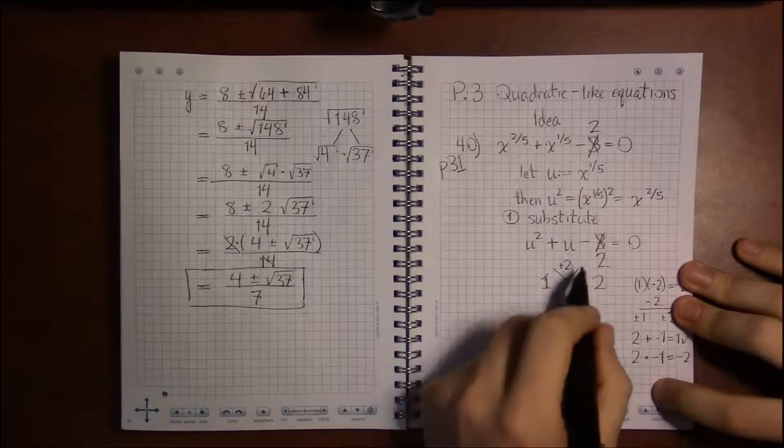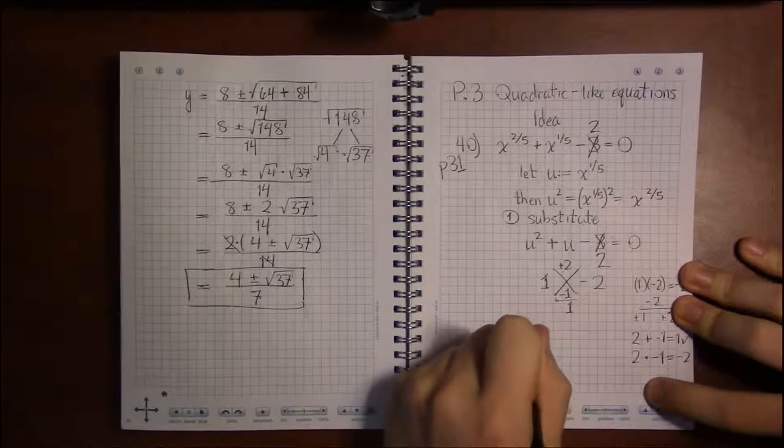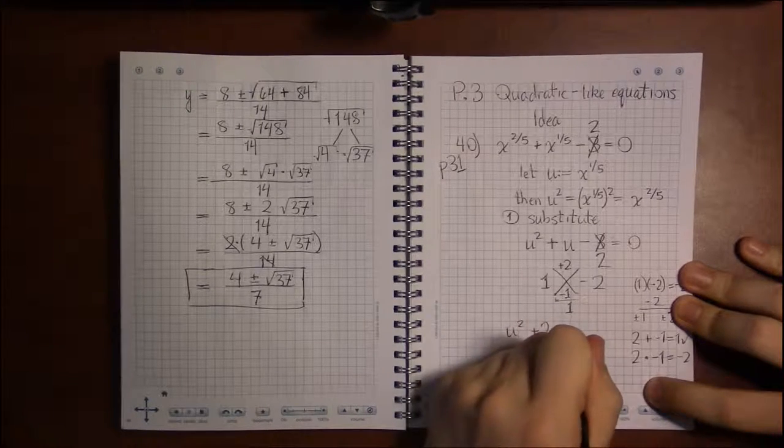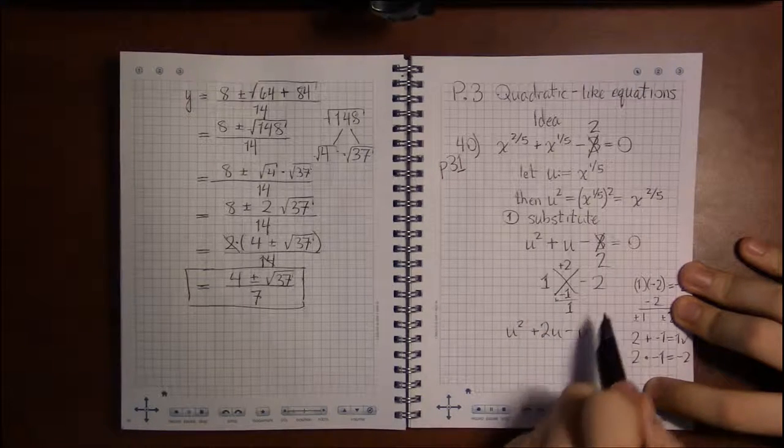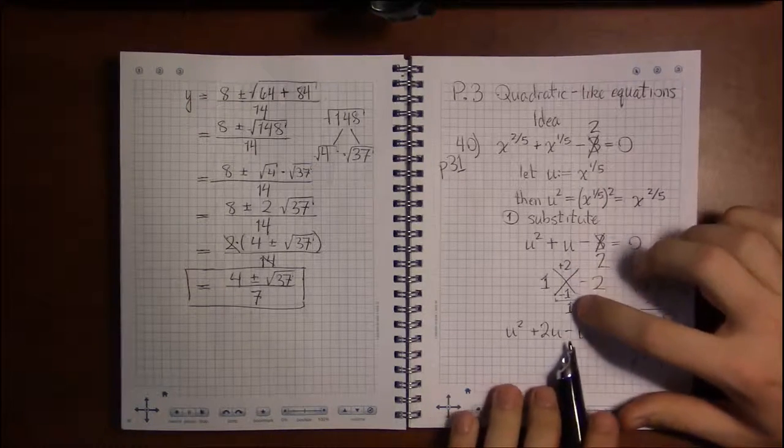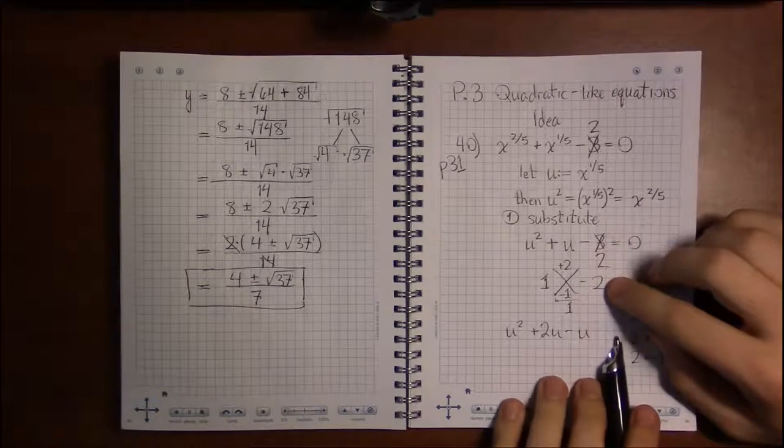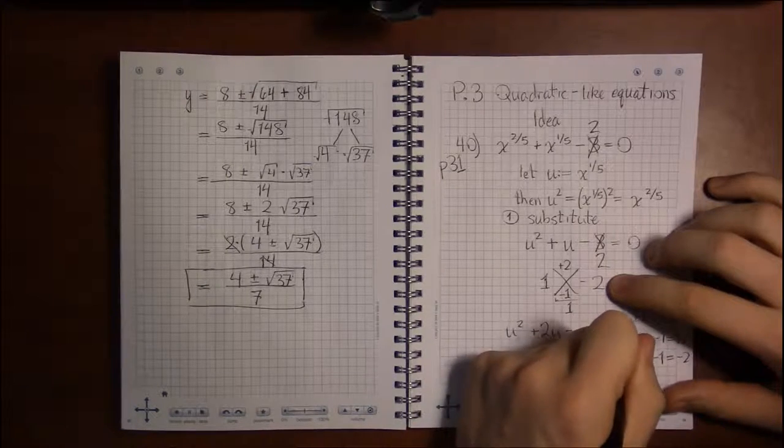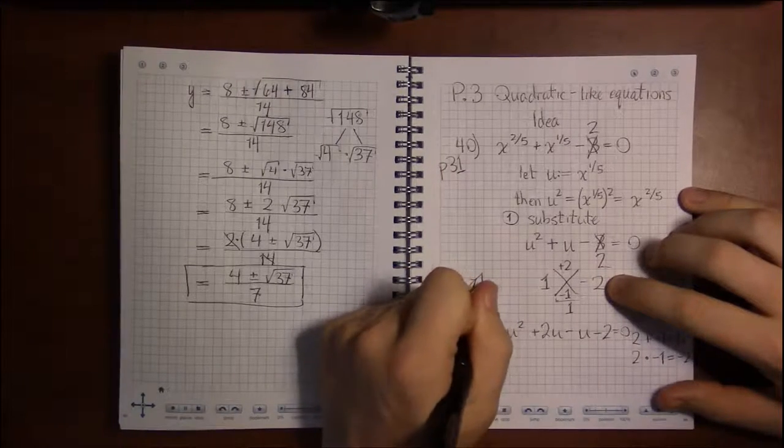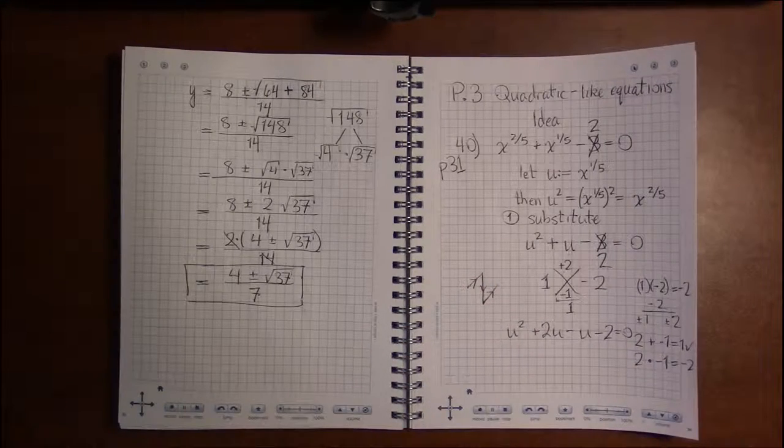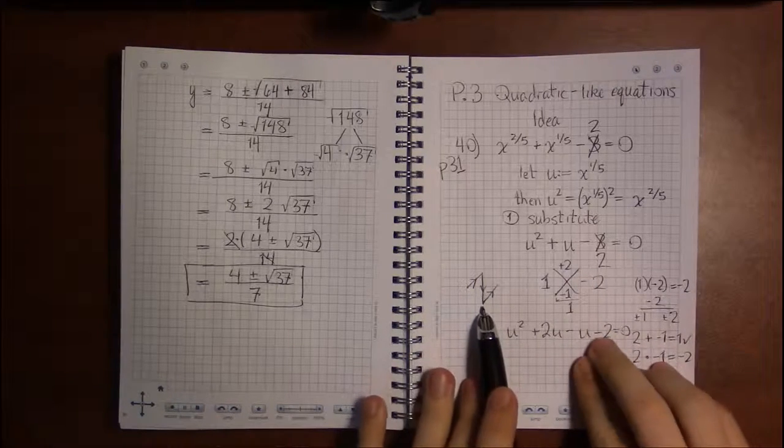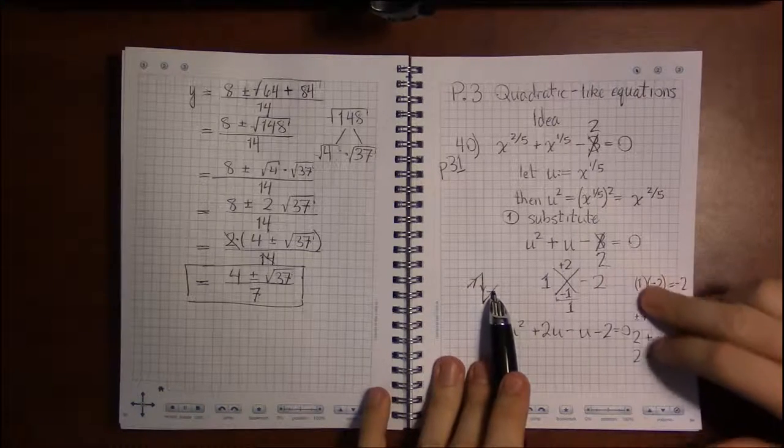And two times minus one is minus two, the same thing you get multiplying across. So this should work out. We can now factor by grouping. We have one u squared plus two u minus one u, or minus u, minus two. So I'm reading this off as one u squared plus two u minus u minus two. The order in which I'm reading them off is first, second, third, fourth, in this kind of zigzag pattern. That's my first coefficient, my second coefficient two, my third coefficient minus one, and my last coefficient minus two.